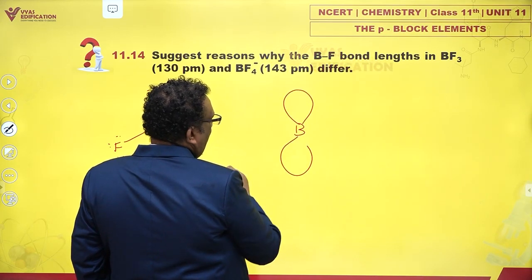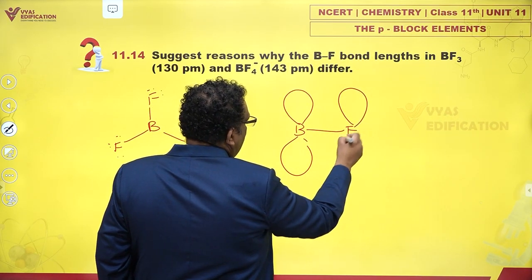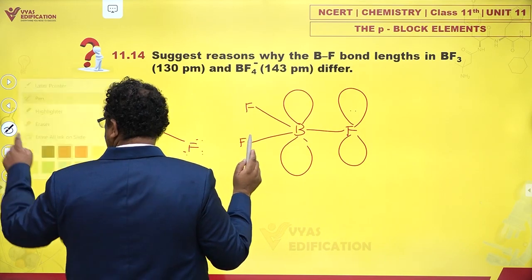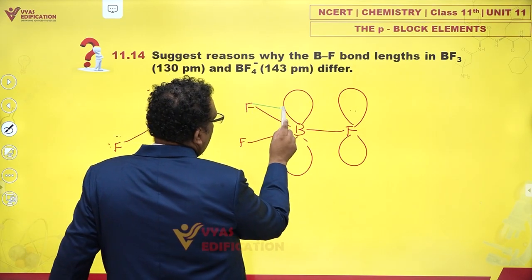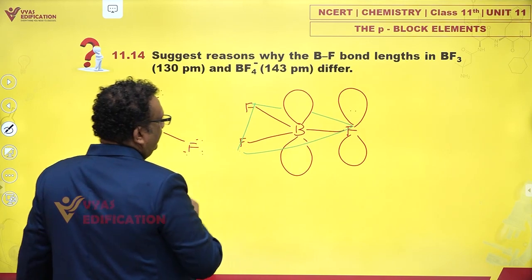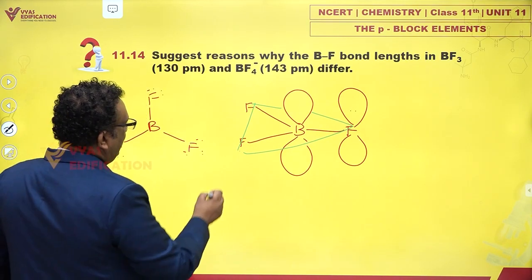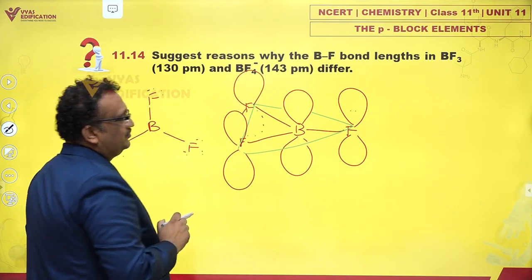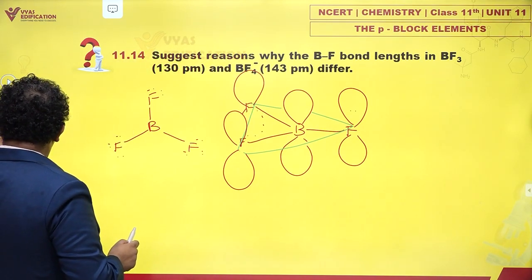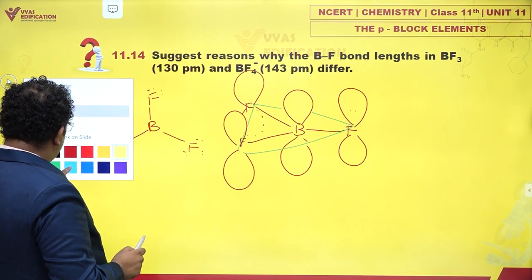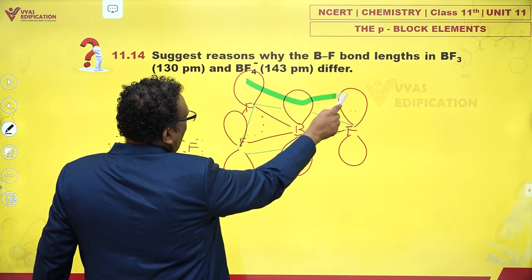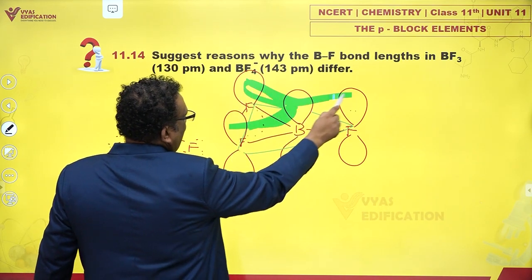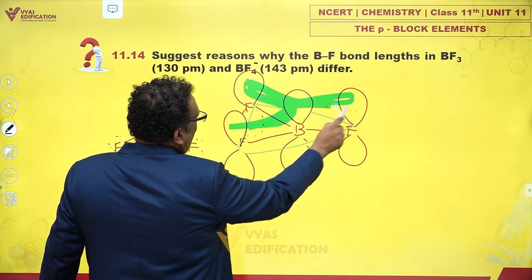Boron has an empty P orbital, and fluorines have a lone pair. What happens is that this electron cloud—there is significant delocalization from this side, this side.